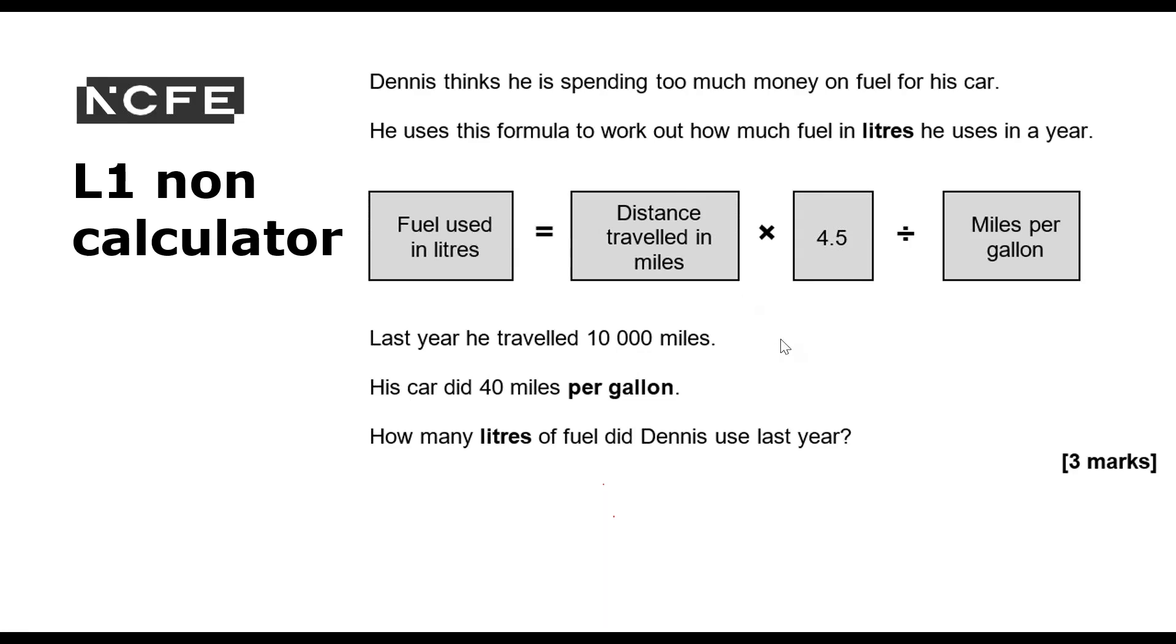That'll be harder for me to do on an on-screen assessment, but I can do it on paper. So that bit is going to go into this box. His car did 40 miles per gallon, so this bit is going to go in this box. How many litres of fuel did Dennis use last year? So we've got the fuel equals, distance travelled is 10,000, times 4.5 divided by miles per gallon is 40.